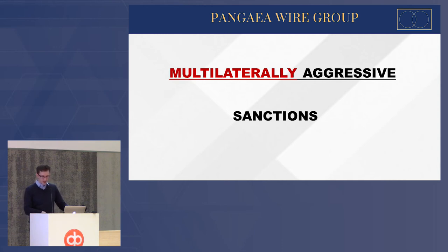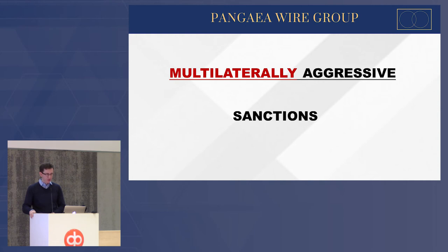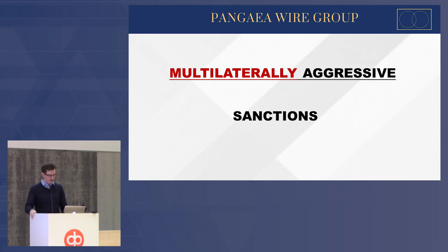OFAC in some cases also encourages companies to voluntarily disclose violations in exchange for softer sentences. The response to sanctions violations also differs: the US is very aggressive, while different EU nations have different responses — in some cases violations are illegal, in other cases you only get an administrative mark against your name. So internally the EU doesn't have a consistent response to sanctions violations, and this picture becomes increasingly more complex when we consider Brexit.